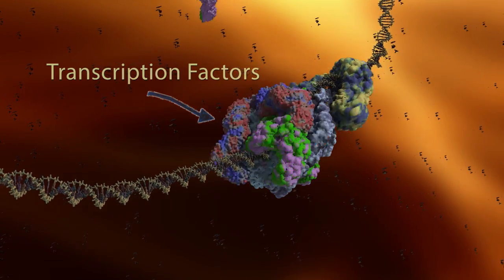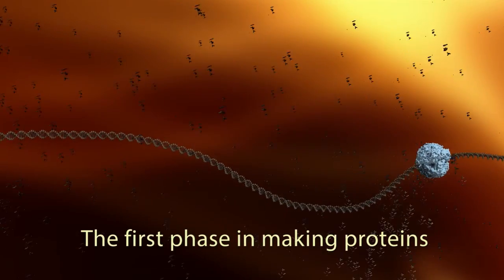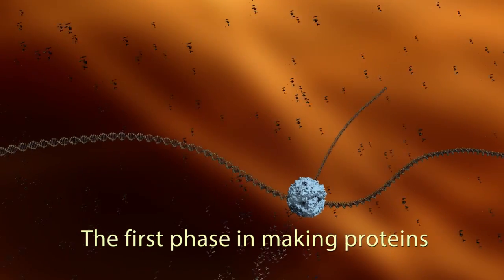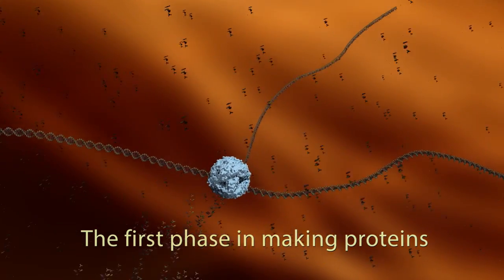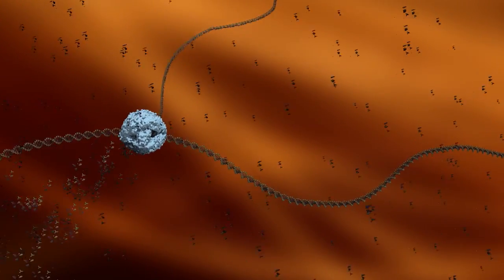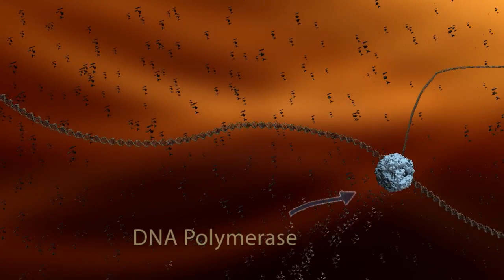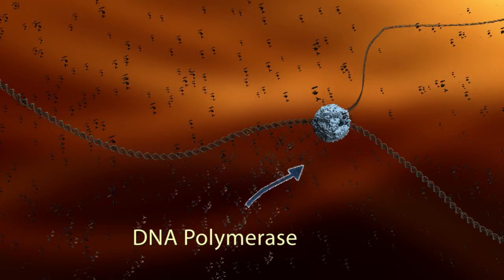The process of transcription requires the perfect sequential binding of several proteins to the DNA. When the proteins are assembled in exactly the correct order and way, the process of making a protein begins when RNA polymerase takes off down the DNA strand.